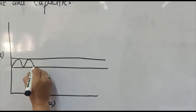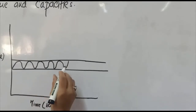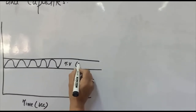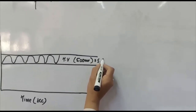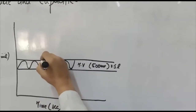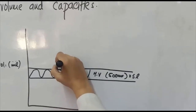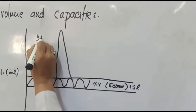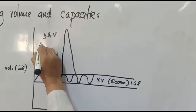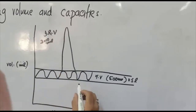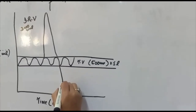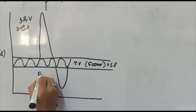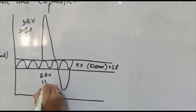The normal breathing of the person — normal inspiration and expiration — is called tidal volume, and it is normally about 500 milliliters or 0.5 liters. Then, inspiratory reserve volume: we ask the subject to take a deep breath in. This is the inspiratory reserve volume and it is about 3000 milliliters. Expiratory reserve volume is when the subject takes a deep breath out, and it is about 1100 milliliters.